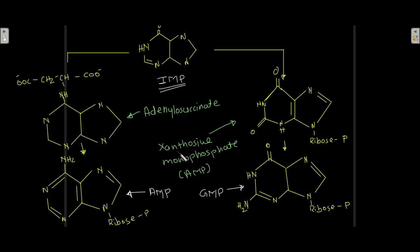IMP also gets converted into xanthosine monophosphate, abbreviated as XMP, and this XMP is then converted into GMP. So this is how the formation of AMP and GMP from IMP looks like.